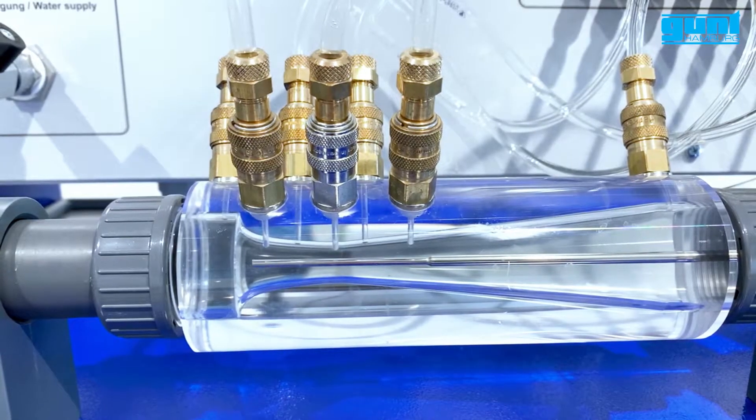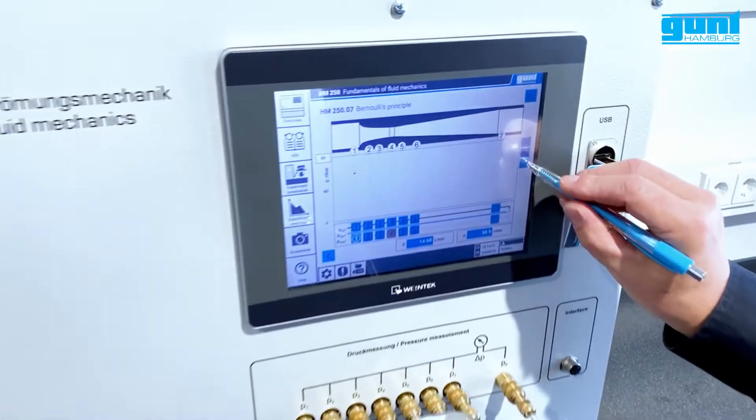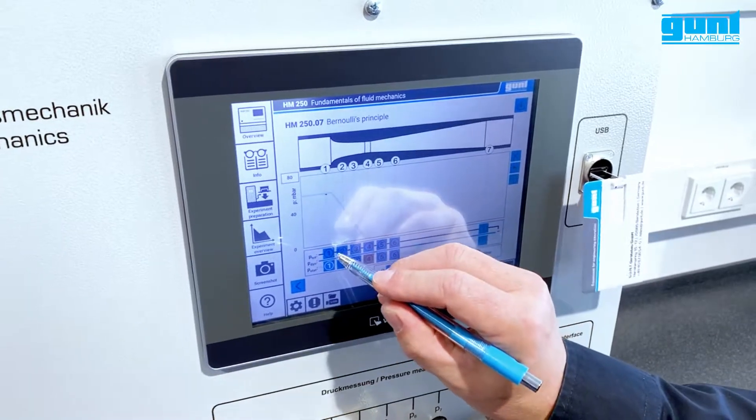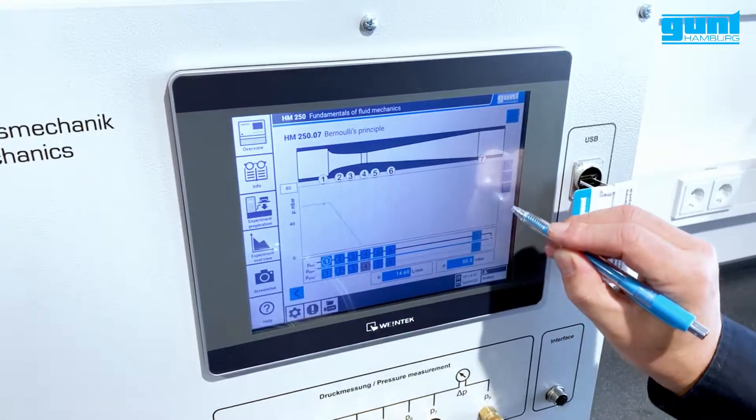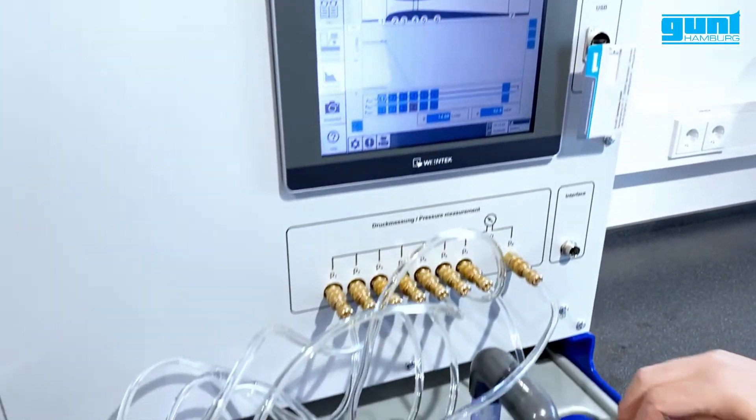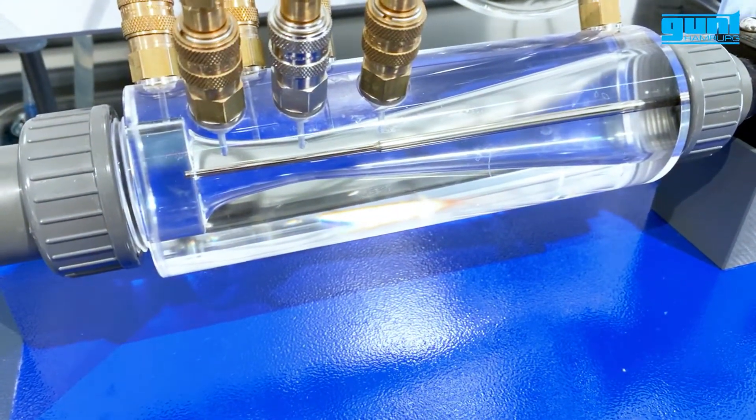After we have positioned the pitot tube at the respective location, we activate the location in the Overview and press the plus button to record the measurement. We do this for the static pressure and the total pressure.